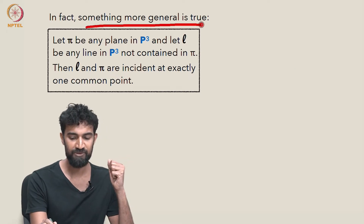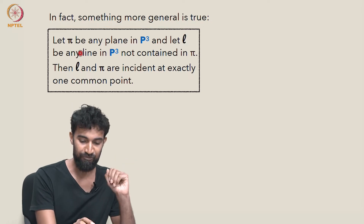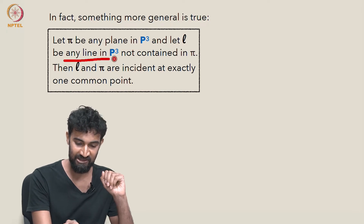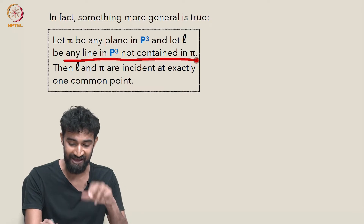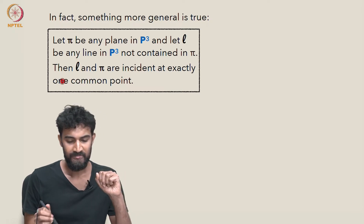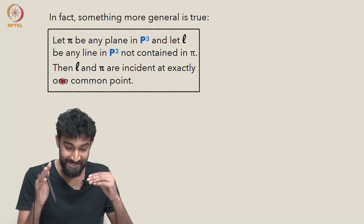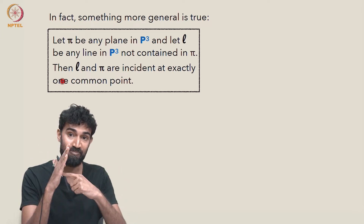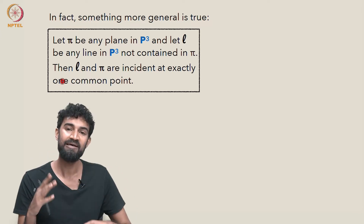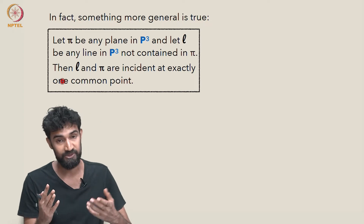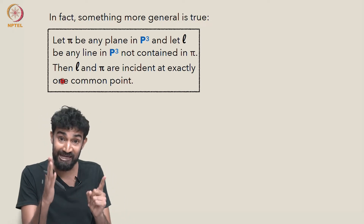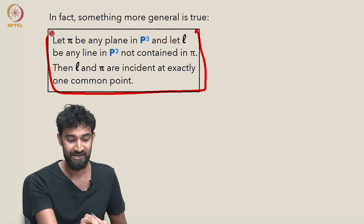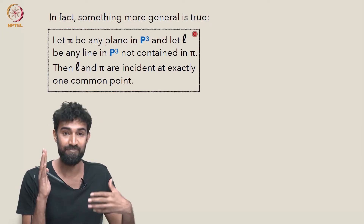It might be helpful to prove a slightly more general feature of P3. Let pi be any plane in P3 and let L be any line in P3 which is not contained within pi. Then I claim that L and pi are incident at exactly one common point. In other words, the line L will pierce the plane pi in one point and only exactly one point. Unlike the situation in R3 where a line L and a plane pi can be parallel and not meet at all, the claim here is that disjointness cannot happen in P3.